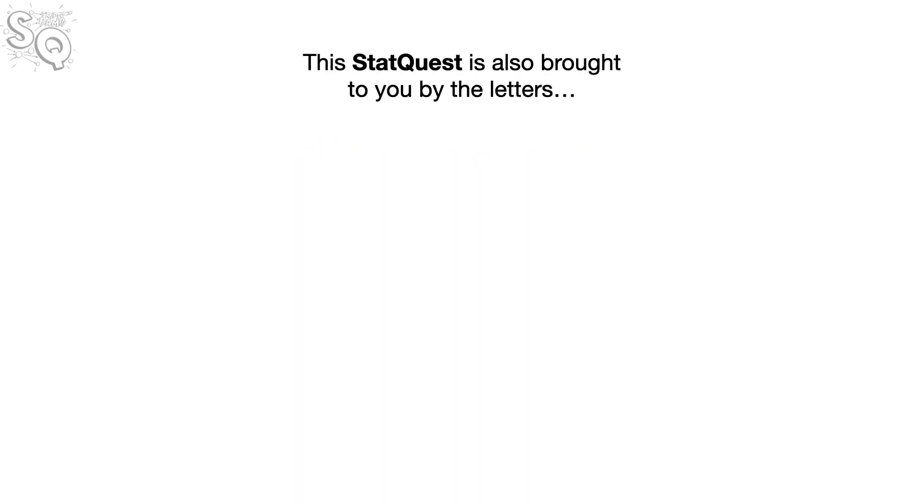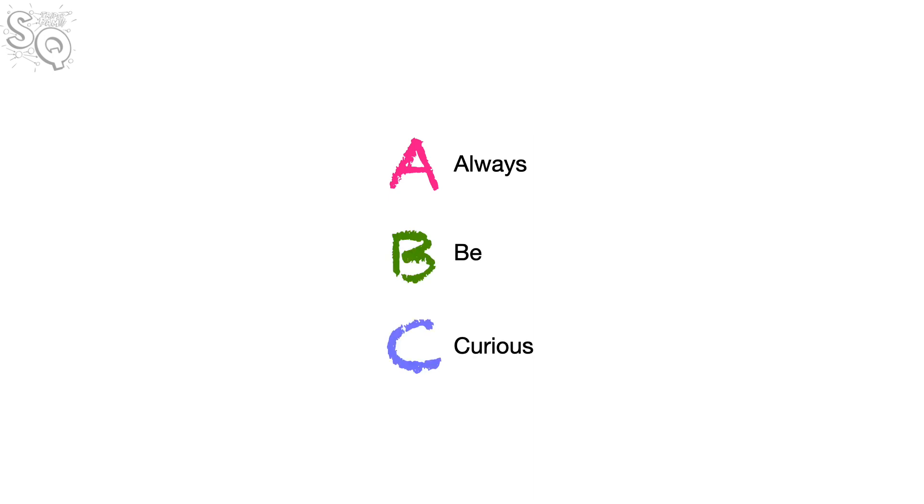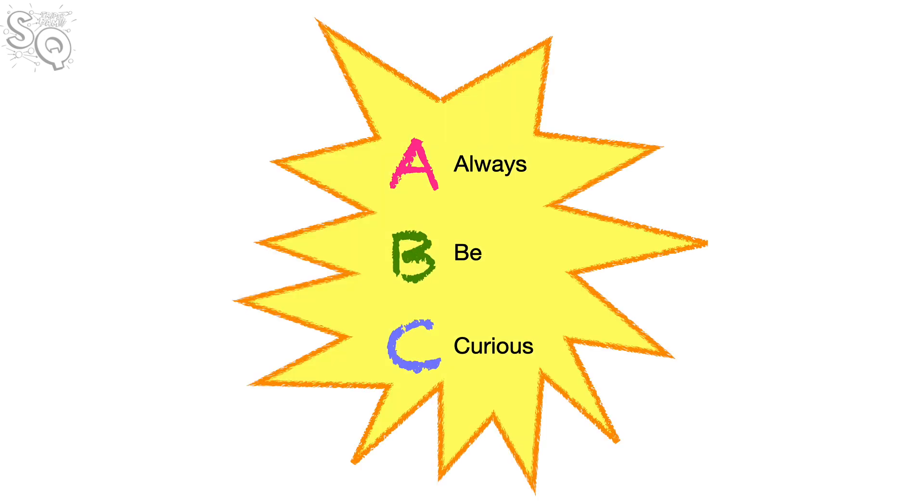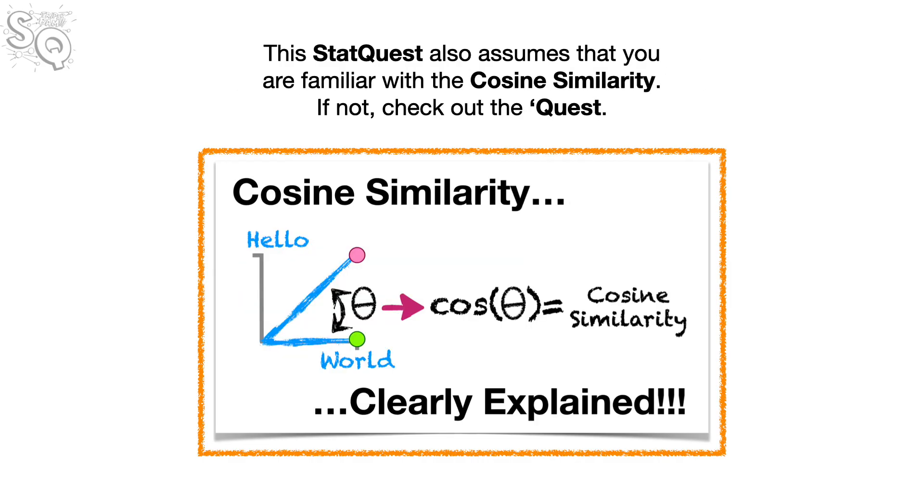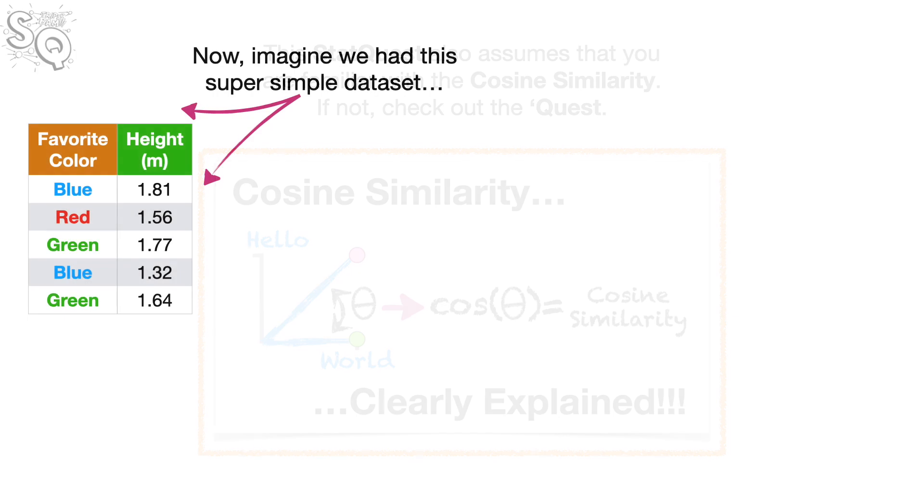This StatQuest is also brought to you by the letters A, B, and C. A always, B be, C curious, always be curious. Note, this StatQuest assumes that you have already seen CatBoost Part 1, Ordered Target Encoding. If not, check out the quest. This StatQuest also assumes that you are familiar with the cosine similarity. If not, check out the quest.